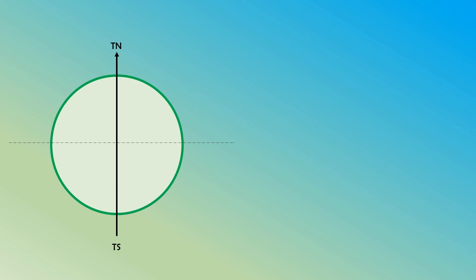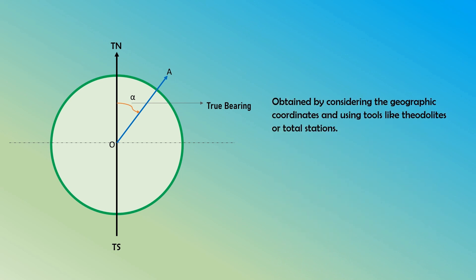We need to find the true bearing of the line OA. The angle made by the line OA with the true meridian north is designated as alpha, and this forms the true bearing of the line OA. The use of the true meridian ensures accuracy and consistency in measuring and communicating directions in surveying, navigation, and mapping. If you are using a true instrument like a theodolite or a total station, the measured bearing is already a true bearing, since these instruments directly measure angles relative to the true meridian, unlike the case of a compass.